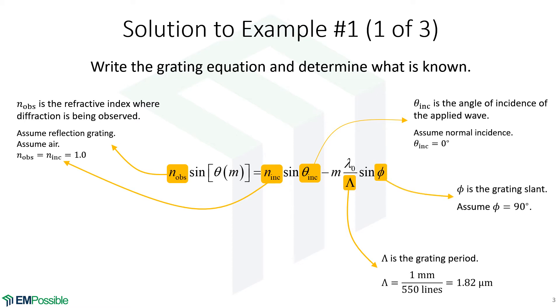Grating slant. This also was not given. However, for a ruled grating, the slant angle is 90 degrees because those grooves are vertical. So without having that information, that's what we would have to assume. So we'll let that phi angle, the slant angle, be 90 degrees.